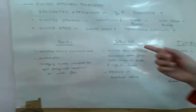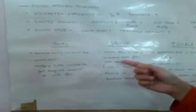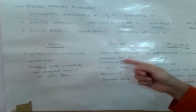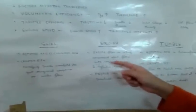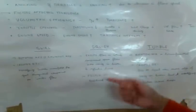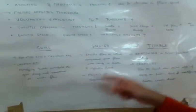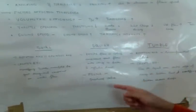The other type of motion is called squish motion. In this motion, radial flow in which compressed gases flow into the cavity in the piston and cylinder head is called squish motion. It is generally found in overhead valves.